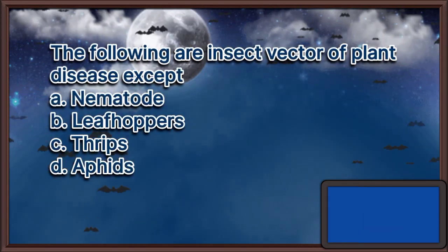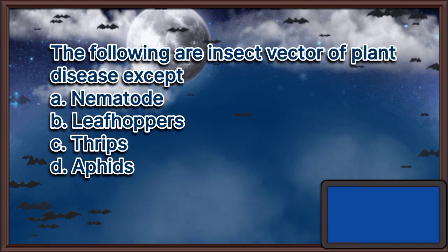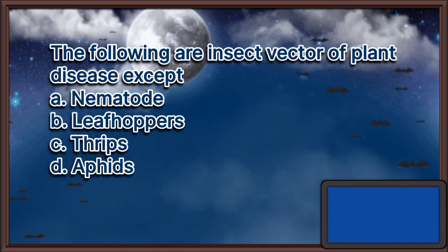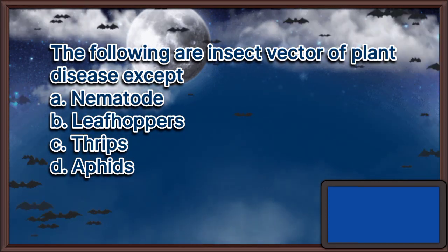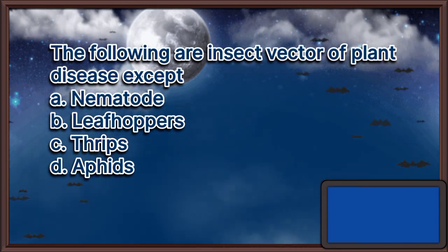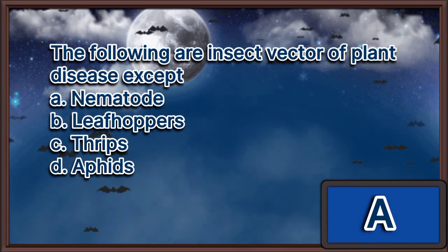The following are insect vectors of plant disease except. A. Nematode. B. Leafhoppers. C. Thrips. D. Aphids. The answer is letter A.